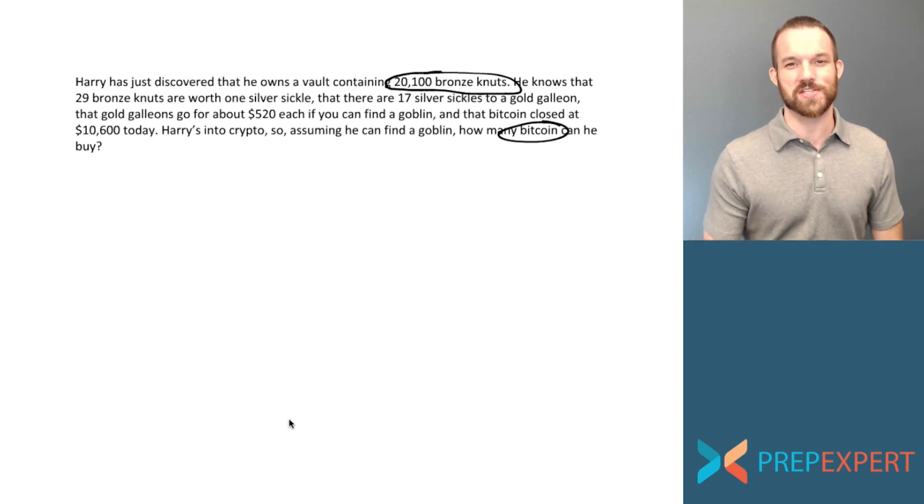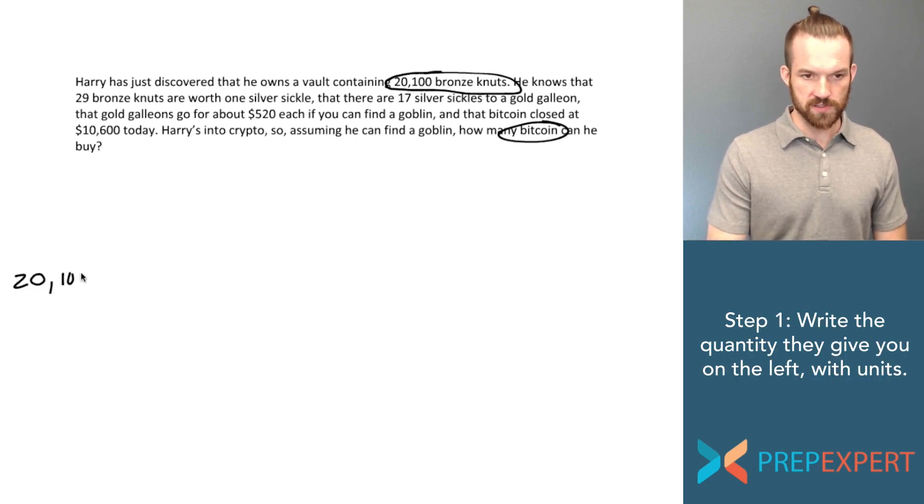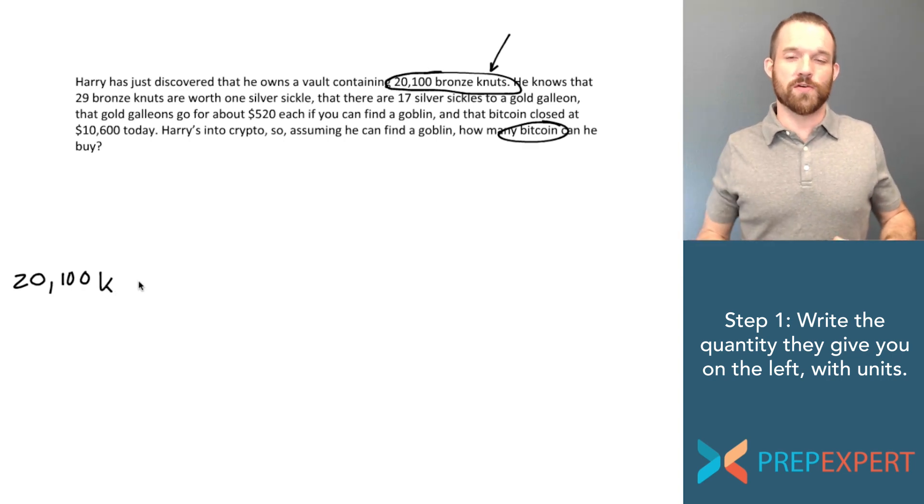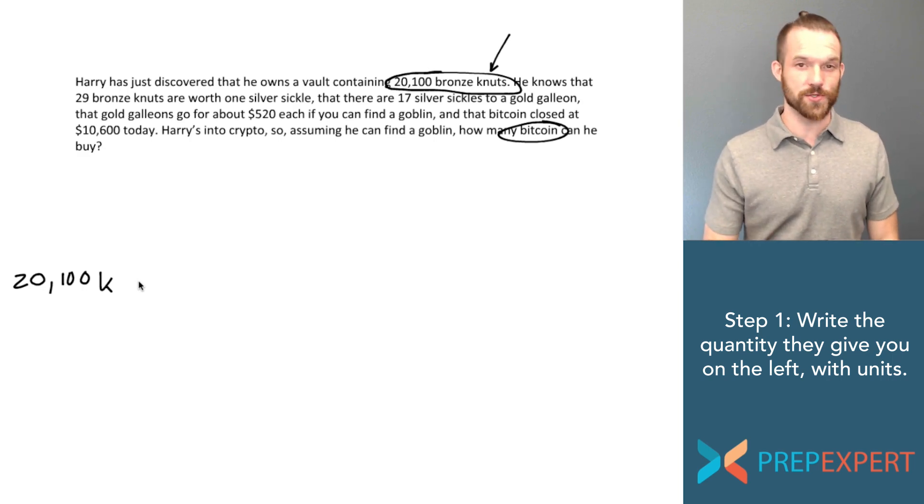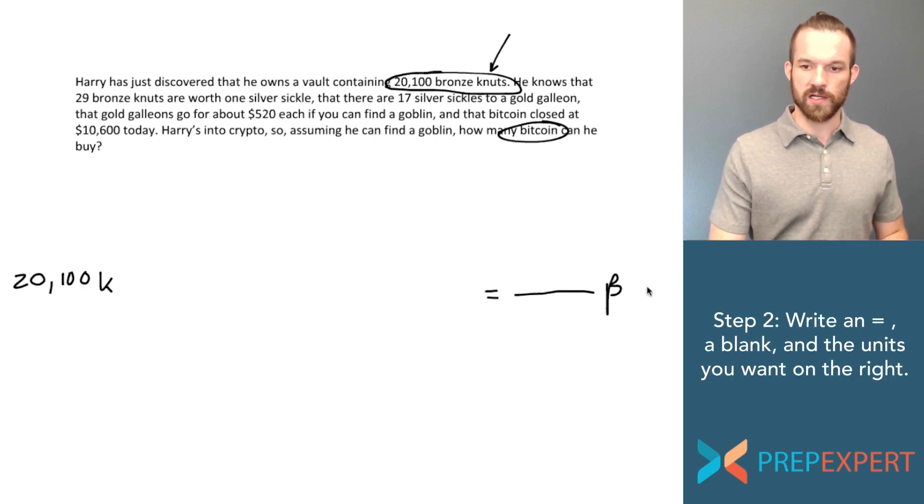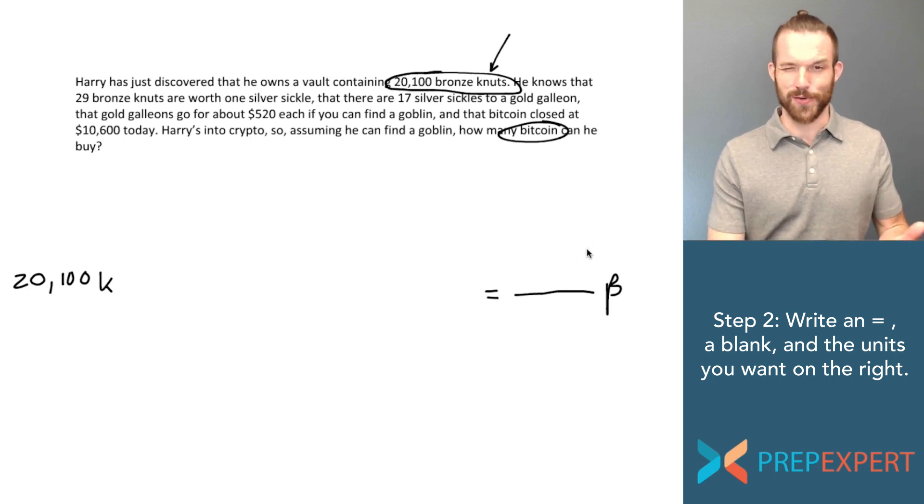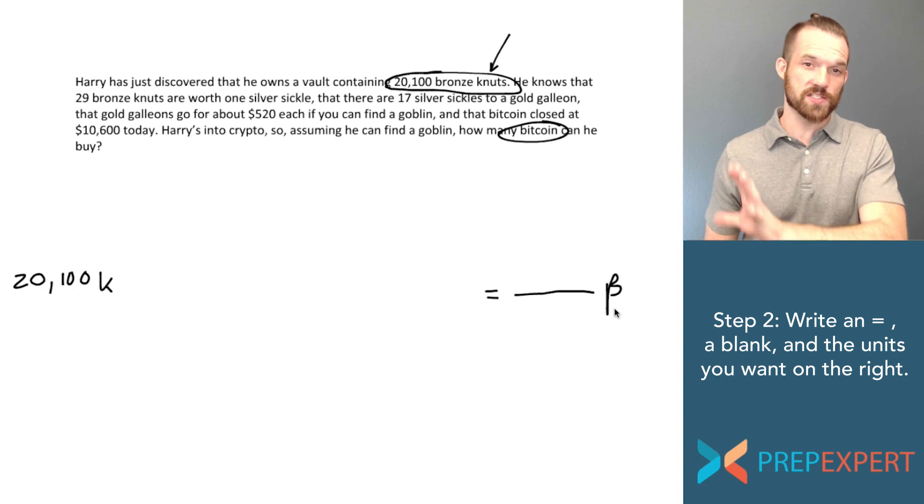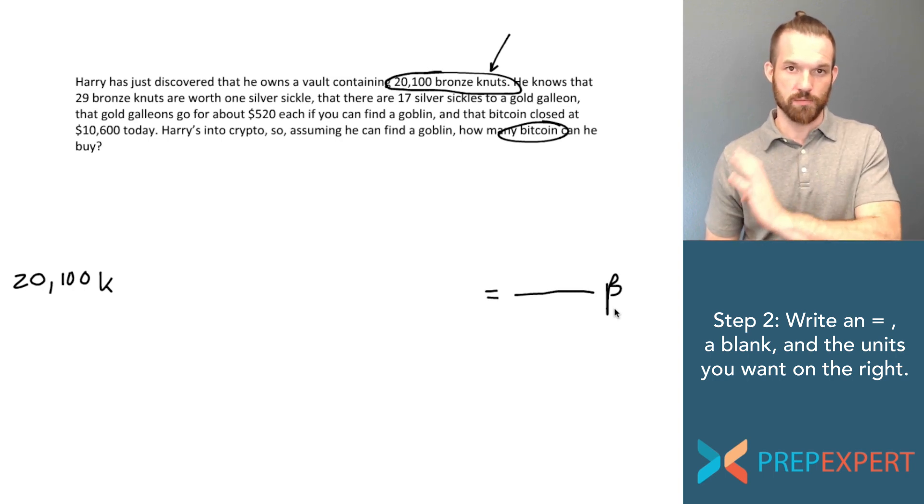Step one of the universal failsafe bulletproof can't mess it up unit conversion method is write the quantity that you know on the left and include its units. In this case its units are nuts so I'll denote that with a K. The next step is to write an equal sign and a blank and the units that you want on the right. In this case we want Bitcoin. So I've got 20,100 bronze nuts on the left. I've got the units that I want on the right. Bitcoin equals blank Bitcoin. Now what do I do?